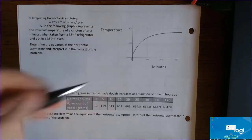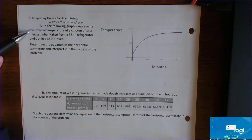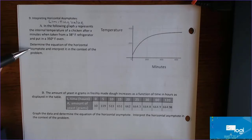In this word problem, y represents the internal temperature of a chicken after x minutes, when taken from a 38-degree Fahrenheit refrigerator and put into a 350-degree oven. We need to determine the equation of the horizontal asymptote and interpret it in the context of the problem.